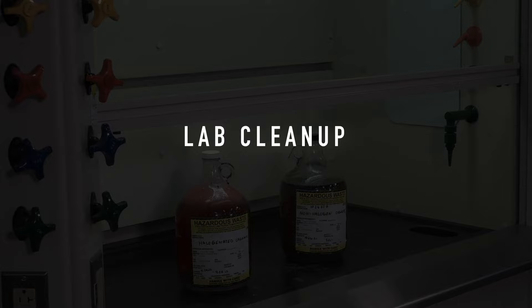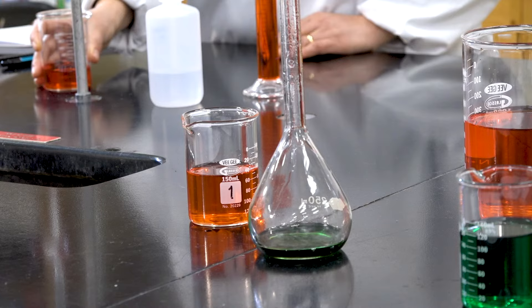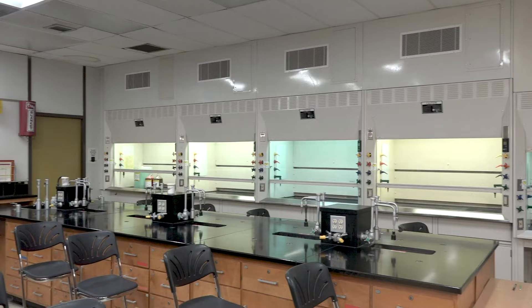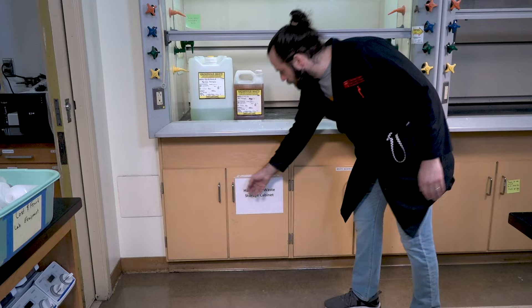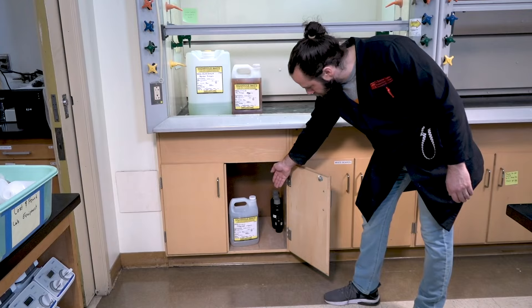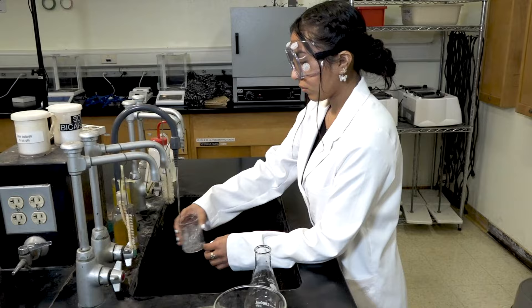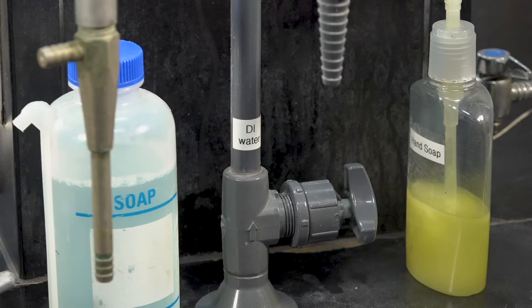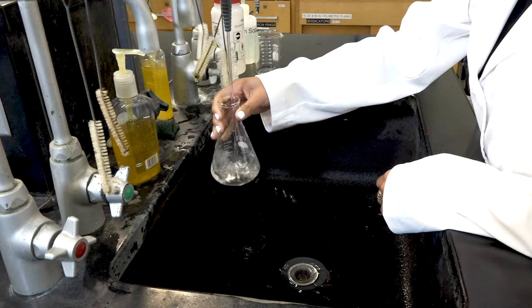At the end of each laboratory experiment, you will need to clean up your station. Start by disposing of all your chemical waste into the proper waste container. Never dispose of anything down the drain unless directed to do so by the instructor. Waste containers are routinely located in the corner fume hood. If you do not see a waste container, ask your instructor. Do not assume that means it is safe to dispose of down the drain. You will then need to wash all glassware you used in the experiment. All glassware must be washed even if it looks clean to the eye. Glassware can be cleaned of most chemical residue simply by rinsing thoroughly with DI water. Fill the glassware with some DI water, swirl, and then dispose of down the drain. Repeat this process three more times to ensure thoroughly clean glassware.